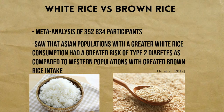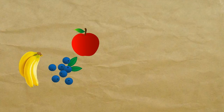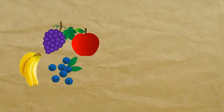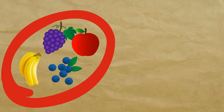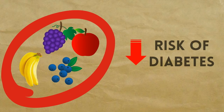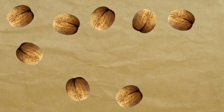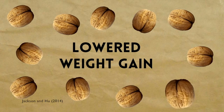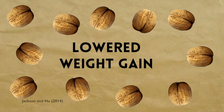Also, greater consumption of whole fruits, such as blueberries, grapes, bananas, and apples are associated with lowered risk of type 2 diabetes. In addition, increased consumption of walnuts is associated with lowered weight gain, ultimately reducing the risk of diabetes.